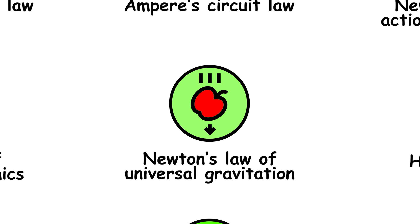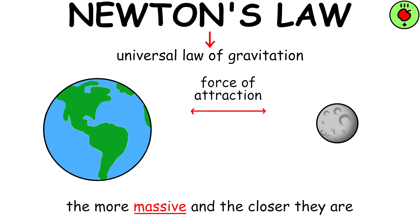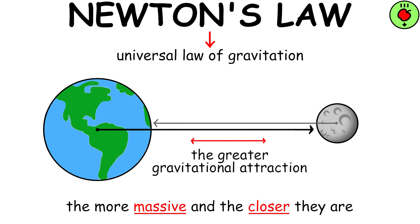Newton's Universal Law of Gravitation states that there is a force of attraction between two objects. The more massive the objects and the closer they are, the greater the gravitational attraction force between them.